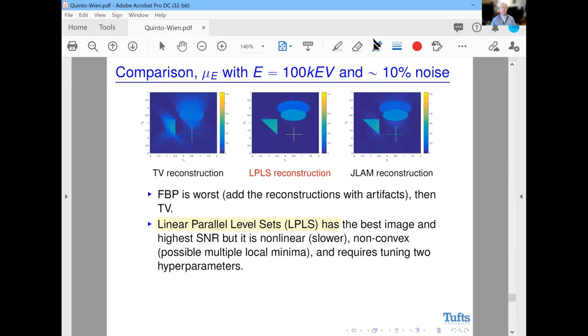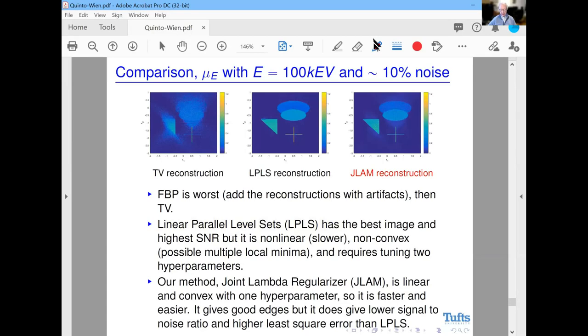Our method, the Joint Lambda regularizer JLAM, is linear and convex and has only that one hyperparameter alpha. So it's faster and easier, and we like to think it gives good edge detection. It's certainly better than TV. But it does give lower signal-to-noise ratio and higher least square error than LPLS. So our point is it can be a useful reconstruction method. And also our meta point is that this can be a reasonable thing to use in luggage testing.